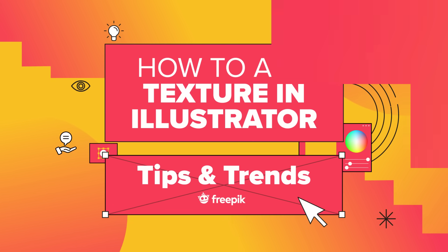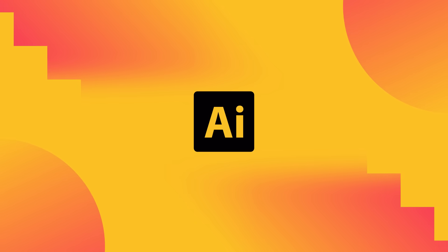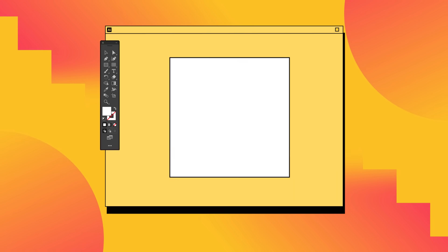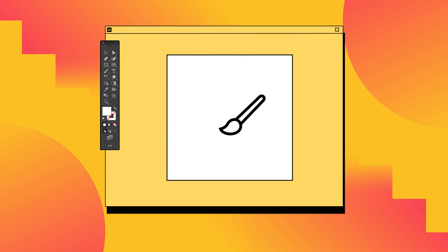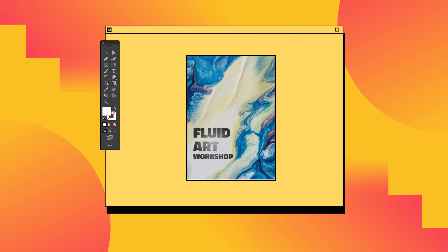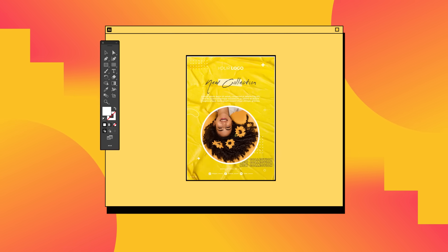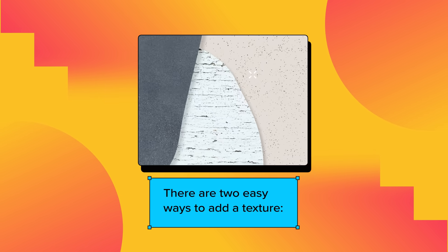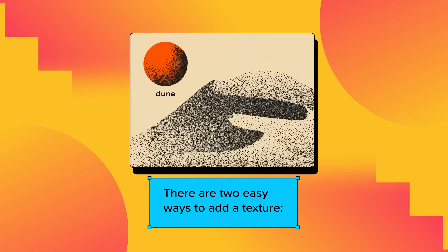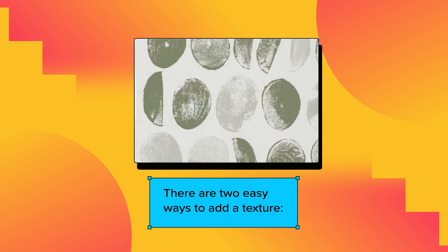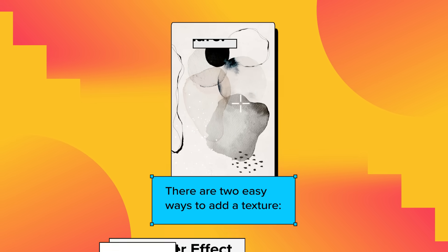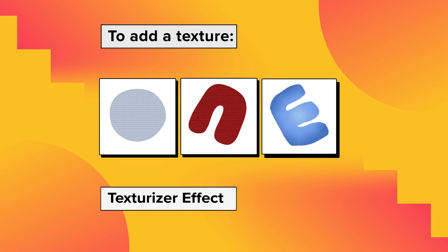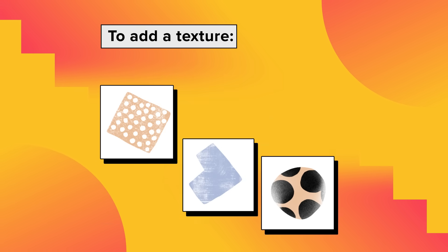In this video we're going to show you how to add textures to your illustrations using Adobe Illustrator. There are two easy ways to add a texture: with the Texturizer effect, or by overlaying an image.